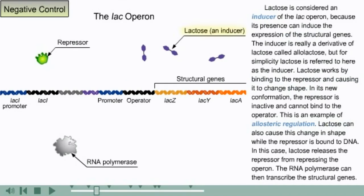Lactose is considered an inducer of the lac operon because its presence can induce the expression of the structural genes. The inducer is really a derivative of lactose called allolactose, but for simplicity, lactose is referred to here as the inducer. Lactose works by binding to the repressor and causing it to change shape. In its new conformation, the repressor is inactive and cannot bind to the operator. This is an example of allosteric regulation.